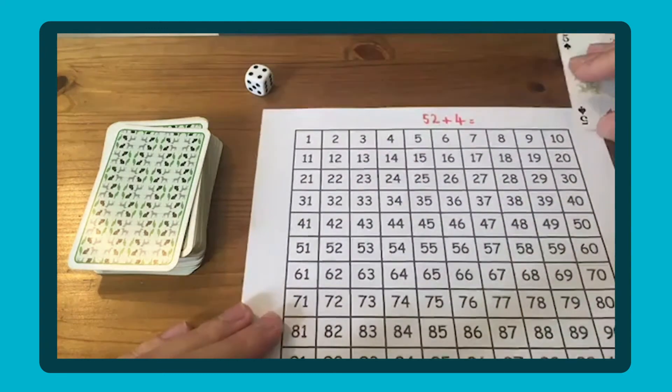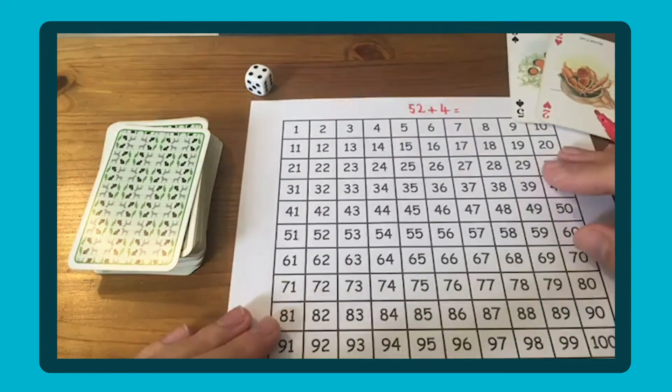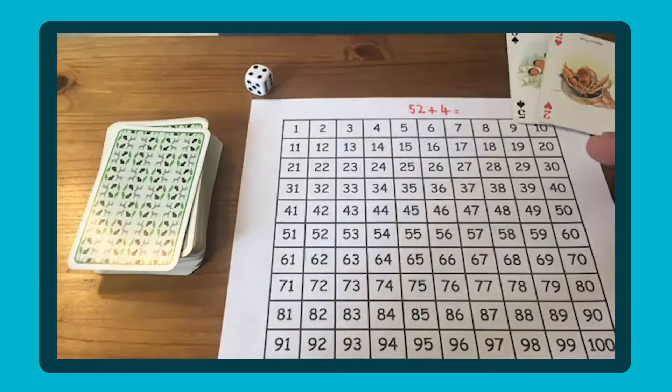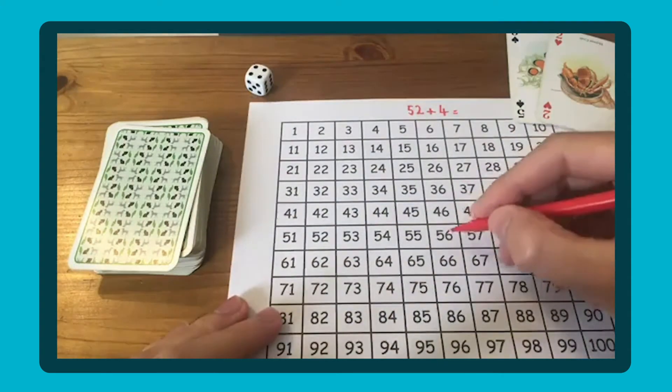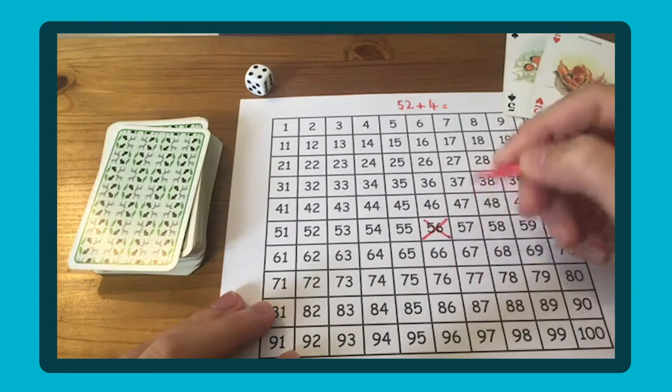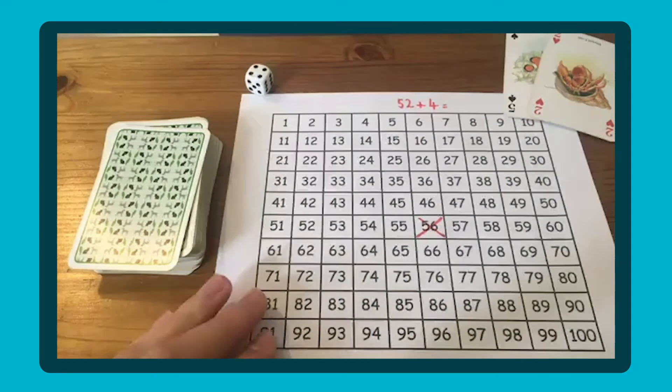The idea is we're going to link three. We've got 52 add four, so I'm looking at 53, 54, 55, 56. I'm going to look for 56. Player one is working in red and they're going to cross that off.